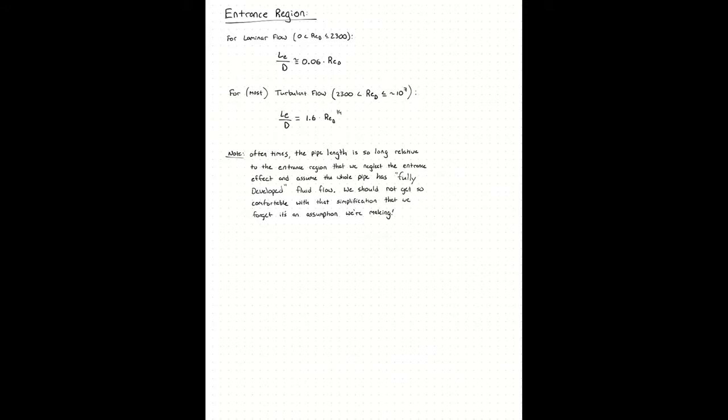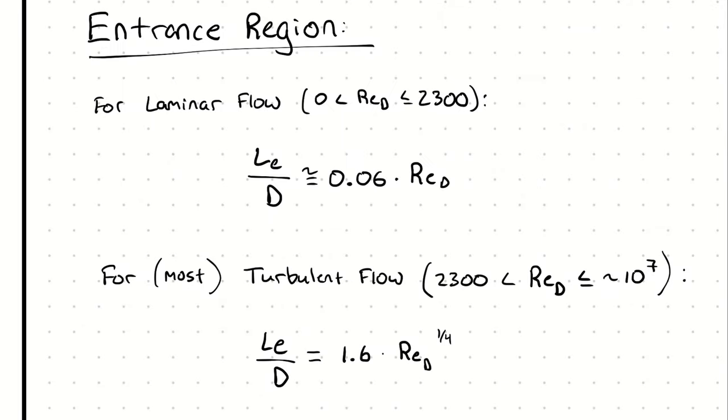The empirical correlations we use to predict entrance region length look like this. For laminar flow, the dimensionless proportion of entrance length to diameter is approximately 0.06 times the Reynolds number in the fully developed region.